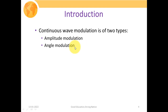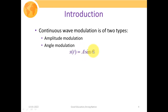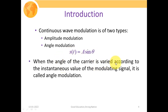Conversely, another approach for transmitting our signal through a high frequency carrier is to modify or change its angle with respect to the amplitude variation of the message signal — this is termed angle modulation. So when the angle of the carrier is varied according to the instantaneous value of the modulating or message signal, it is called angle modulation.